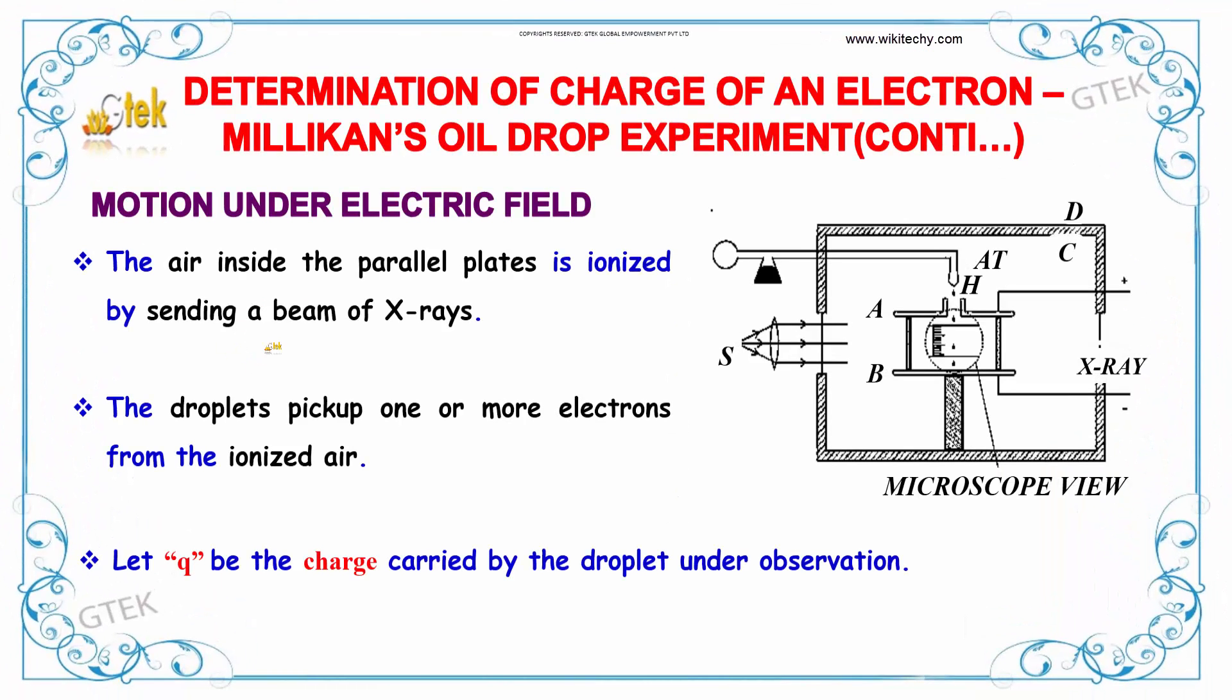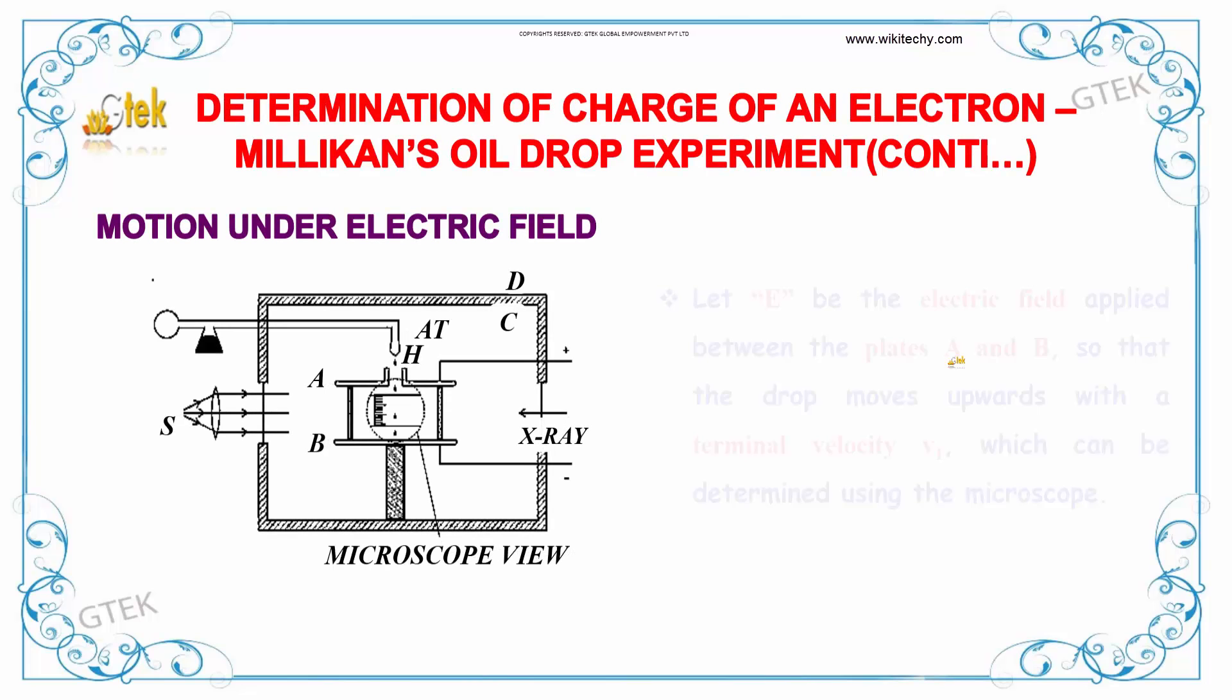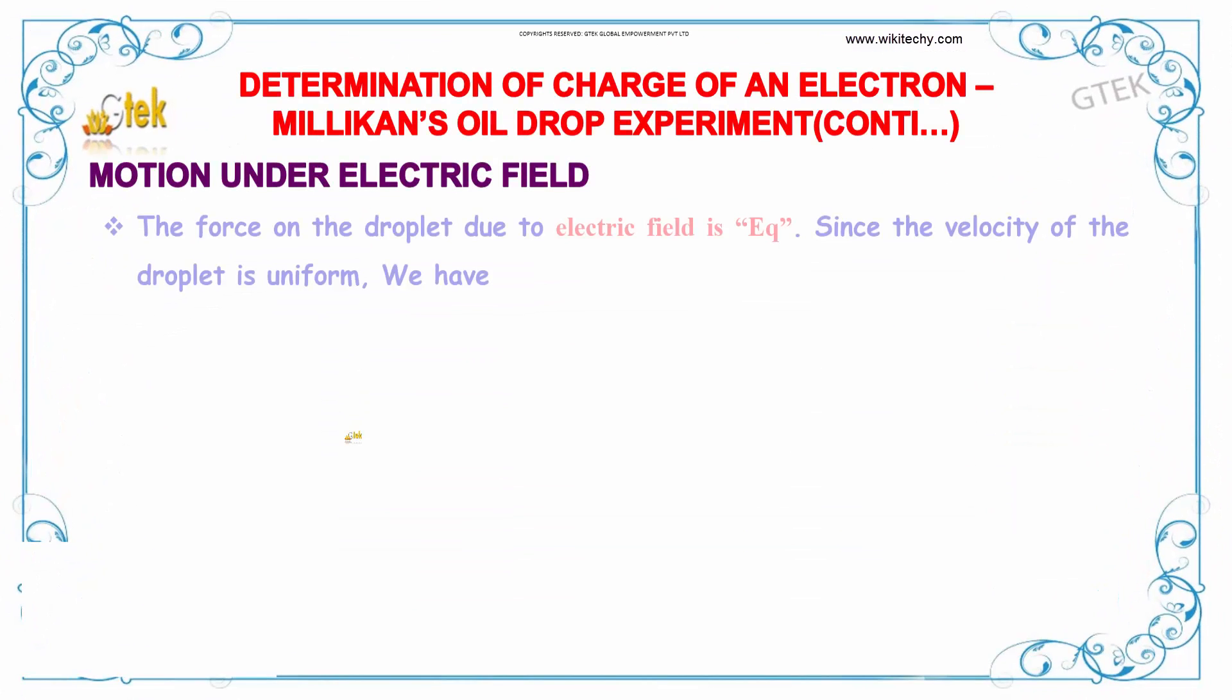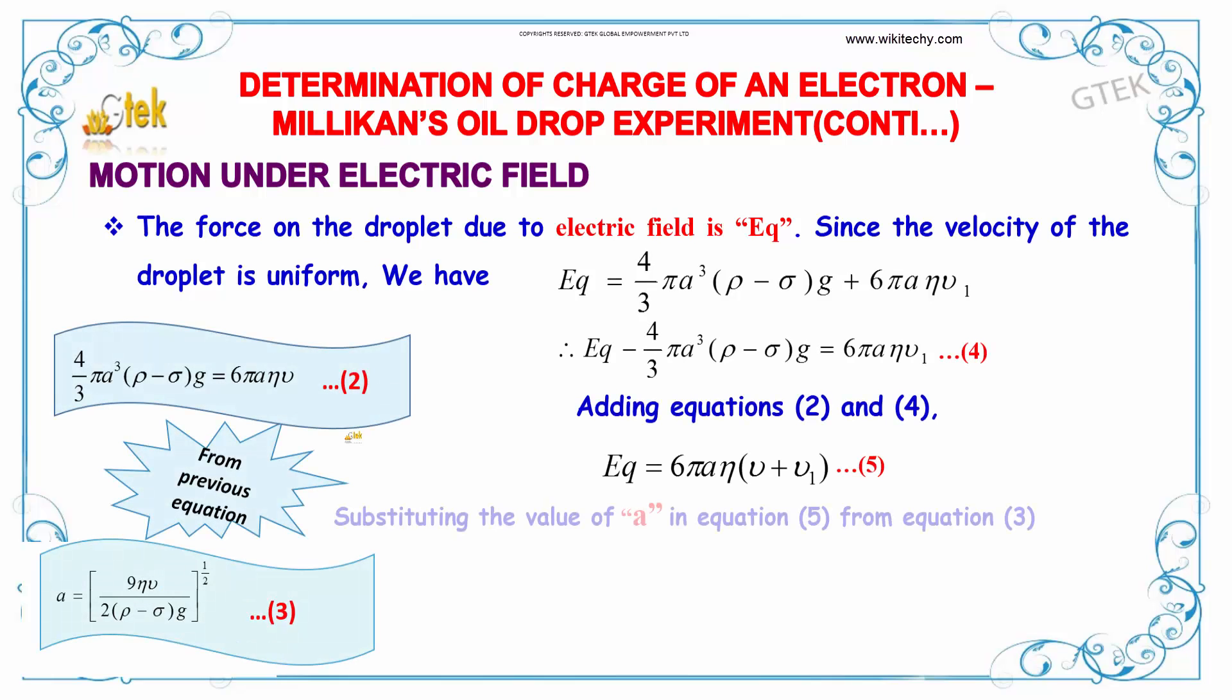We'll talk about motion under electric field. The air inside the parallel plates is ionized by sending an x-ray. The droplets pick up one or more electrons from the ionized air. Let q be the charge carried by the droplet under observation and E be the electric field applied between the plates A and B, so that the drop moves upwards with a terminal velocity V1 which can be determined using the microscope.